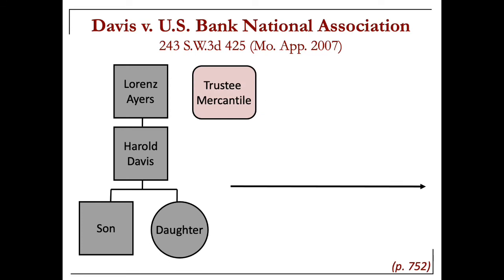Davis v. U.S. Bank is a case in which the beneficiaries wanted to change the trustee. Pay attention to this case for the idea of virtual representation. When you have an irrevocable trust that continues for long periods of time, often it does so because it is benefiting a class of beneficiaries, and that class remains open — meaning more members can join if they are, for example, born.